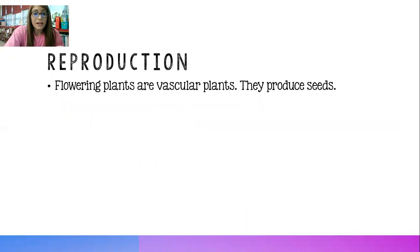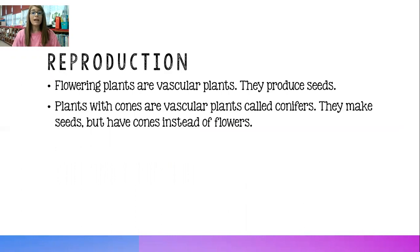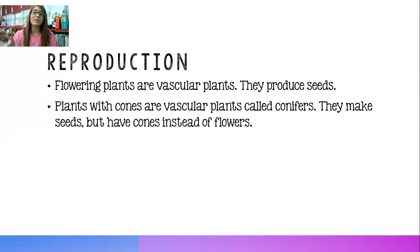Flowering plants are vascular plants, so they produce seeds. The plants that have flowers on them produce seeds. Plants with cones are vascular plants as well and they're called conifers — they make seeds, but instead of having flowers with the seeds in them, they have cones instead.